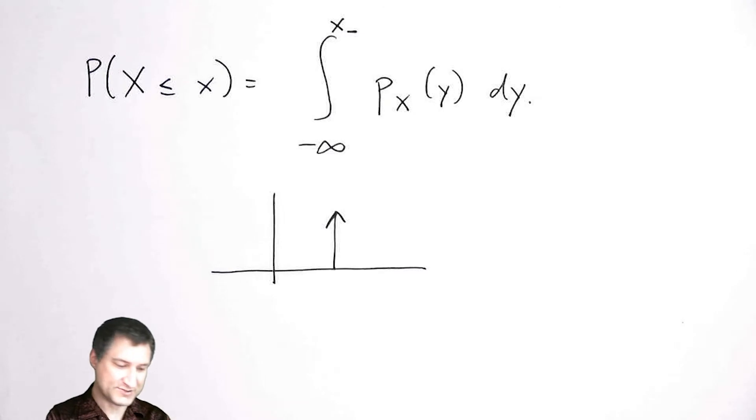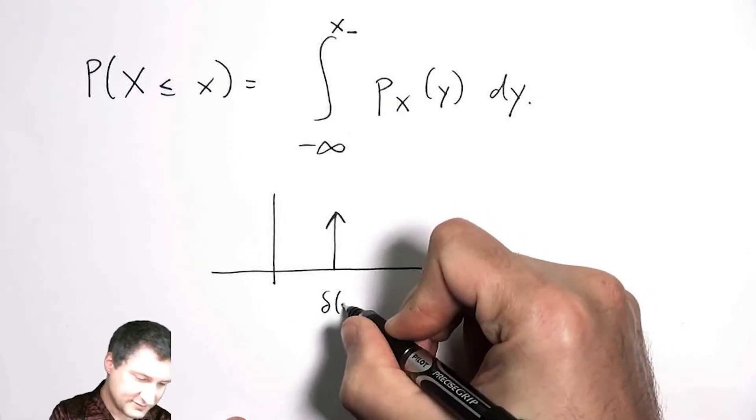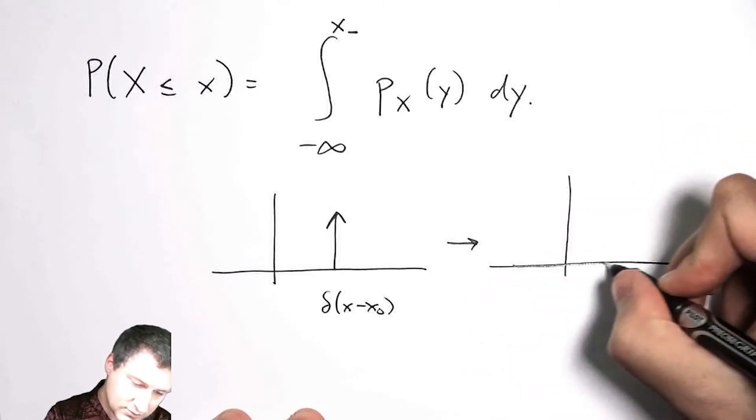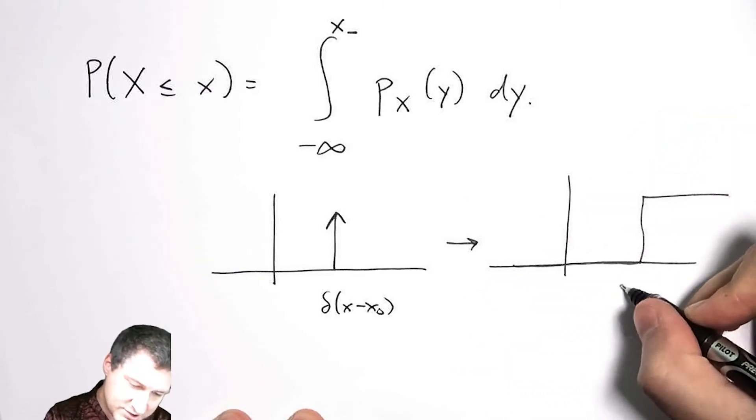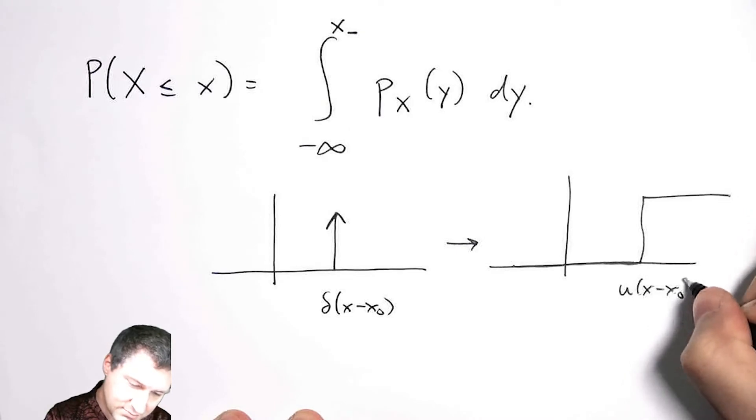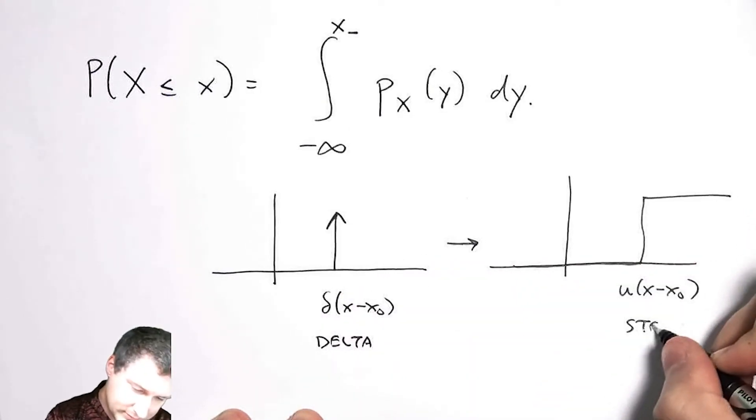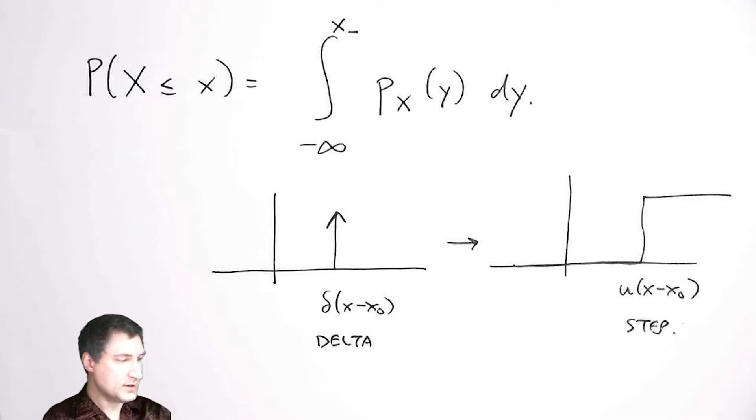So this is kind of why originally I defined these values—instead of using a bar chart I use this impulse function like delta of some value, because when I integrate this, that integrates into a well-behaved function which is the step function, sometimes denoted by little u. And so let's talk about the CDF for a couple other simple random variables.